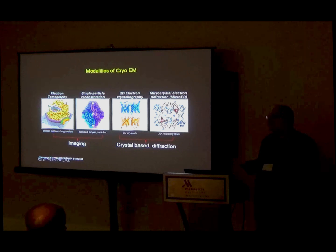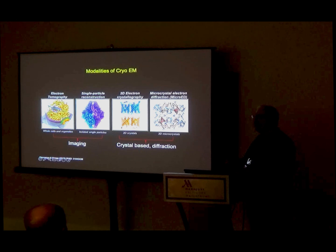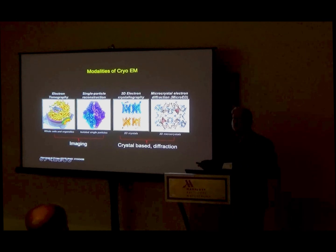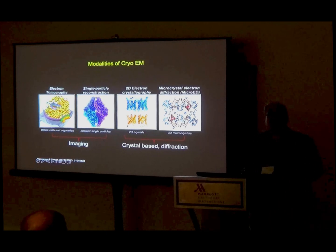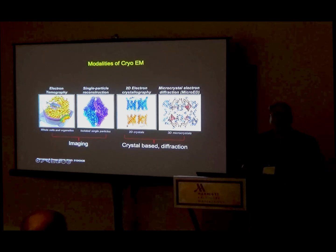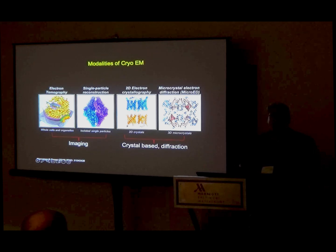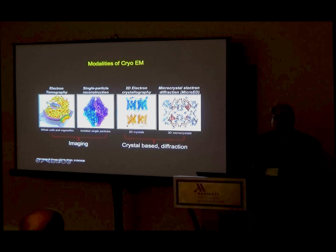Electron diffraction has been used for almost a hundred years. Some of the early papers we've encountered in the literature were electron diffraction of catalase crystals from 1937. What I'm going to tell you today is how we made electron diffraction a viable method for structure determination of proteins, and later by extension of small molecules, drugs, and a whole bunch of different molecules.